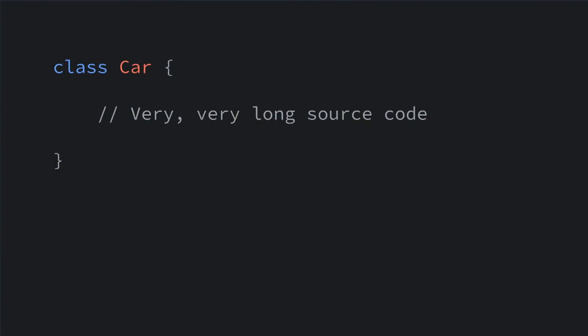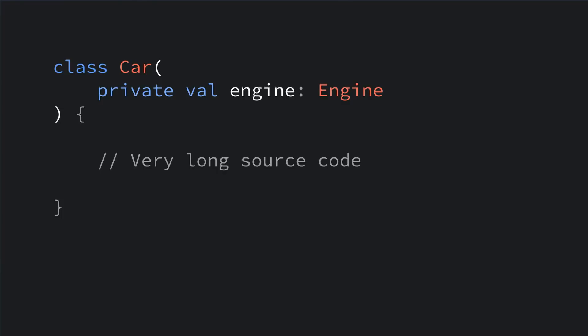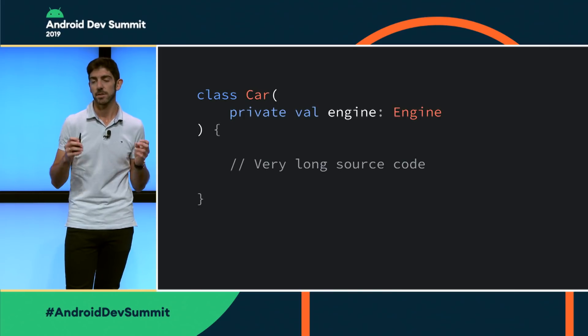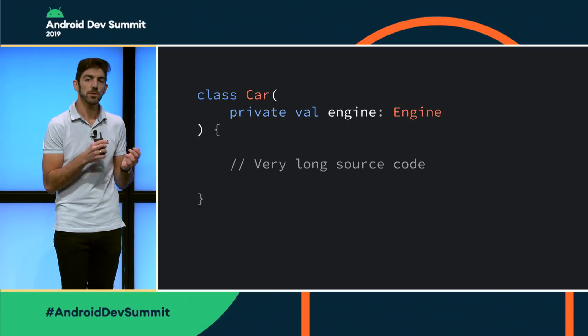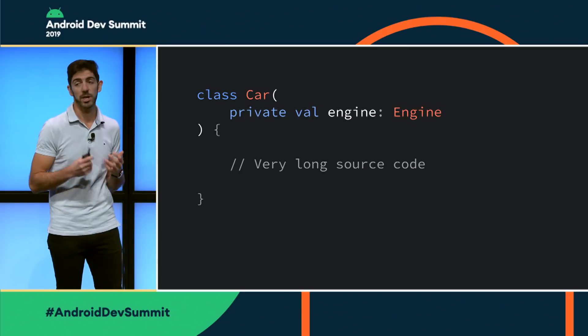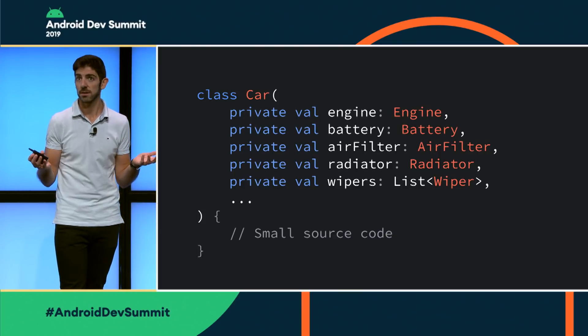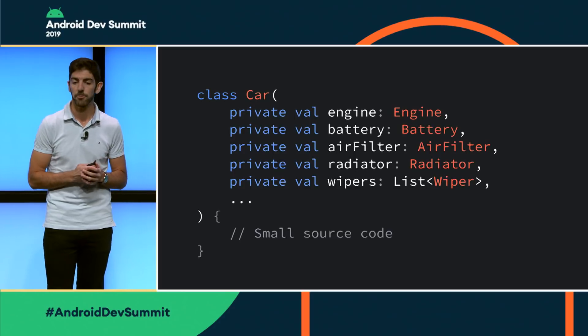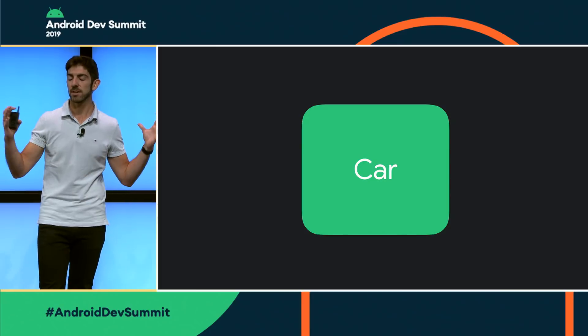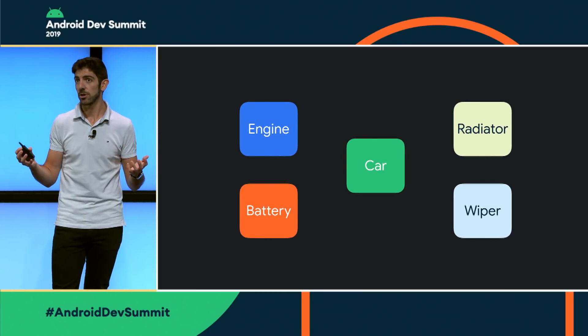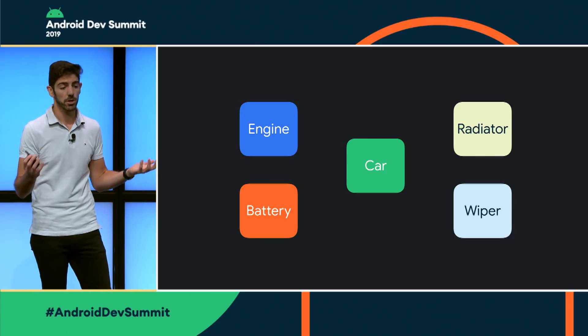So if we see an example, we have a car with very long source code. When you see that your class is doing more than it should, you can extract that logic out of the class, put it in a different class, and pass it as a dependency. For example, with engine-related work, we can create the class Engine and then pass that in as a dependency. Now car reduces its scope and is simpler — the cognitive load to work with the class is a bit lower. This is what's called the single responsibility principle. If we keep iterating on this, you will see that car becomes simpler to manage, with small source code focused on what car should do — assembling a few parts. Multiple people can work at the same time on the app without conflicts.